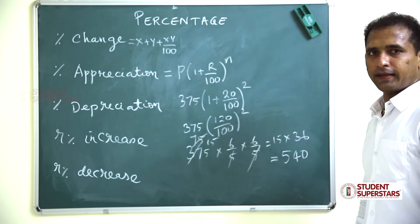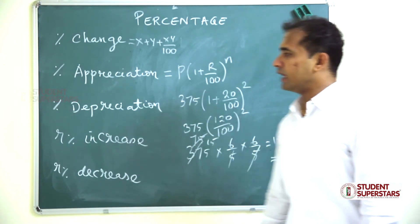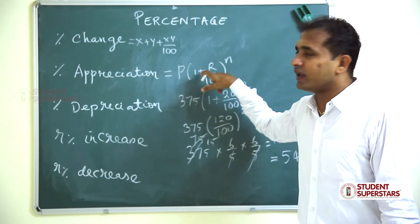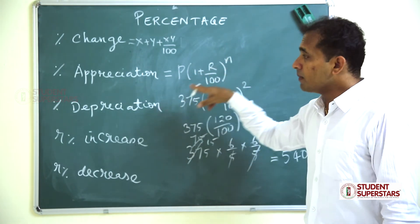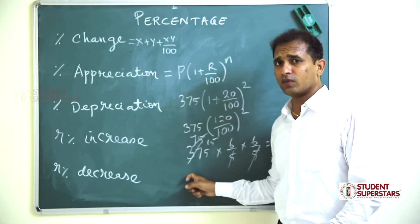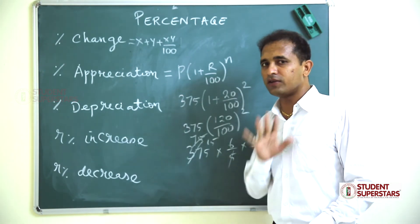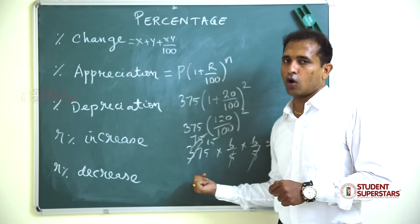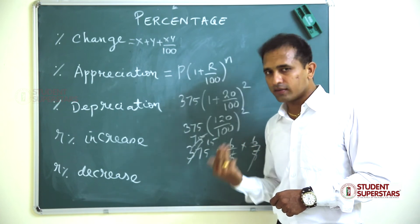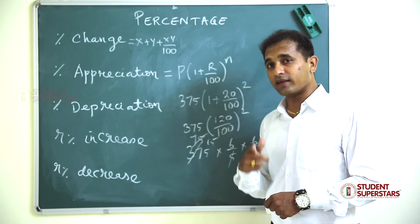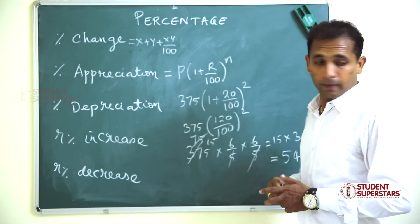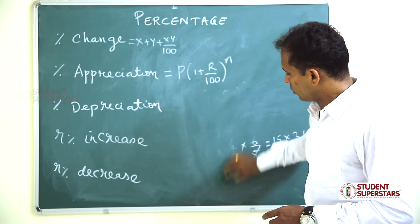Percentage depreciation is when the value decreases every year. The formula is P × (1 − r/100)^n. For example, a board costs 3000 rupees with 10 percent depreciation. Next year: 3000 − 300 = 2700 rupees; the year after: 2700 − 270 = 2430 rupees. For any number of years use P × (1 − r/100)^n.